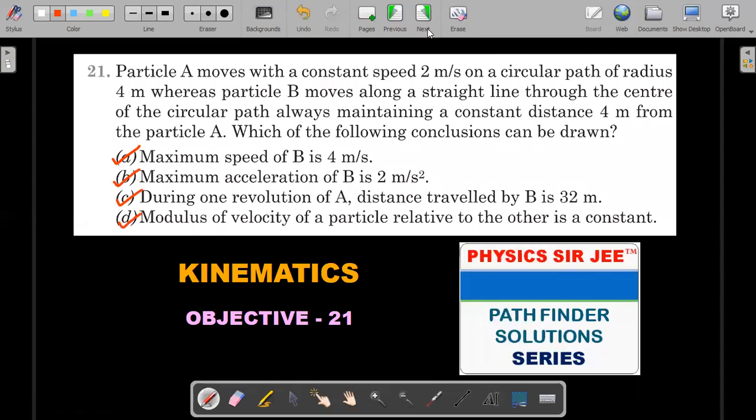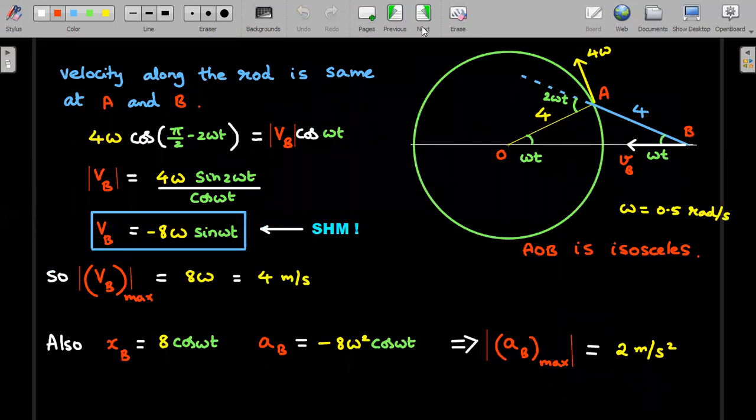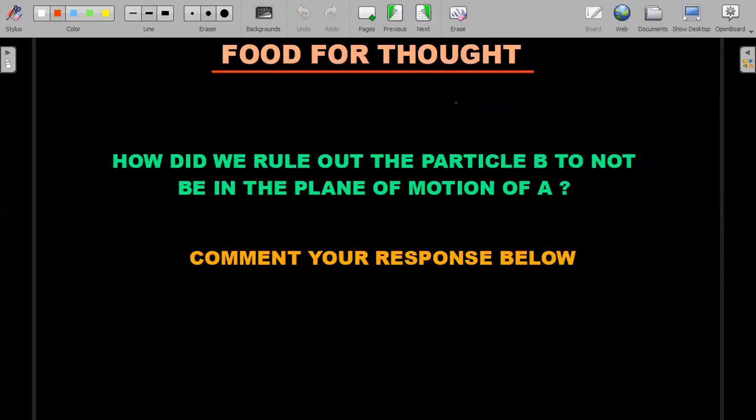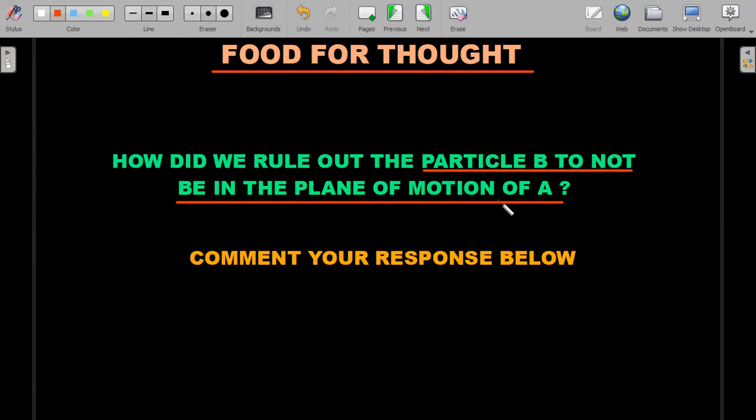We'll go back and mark the options that we got. I think we got all of them - so this is the correct key for this particular situation. If you go through this question very carefully, you should have got one doubt which is very obviously resolved, but I would like to know from you. So the food for thought as you go through this problem is: how did we rule out that particle B is actually not in the plane of motion of A? He never mentioned that it should be in the same plane - that is what I have taken in the entire solution. It's easily resolvable, I hope you got the point. In case you did, please do let me know in the comment section below.